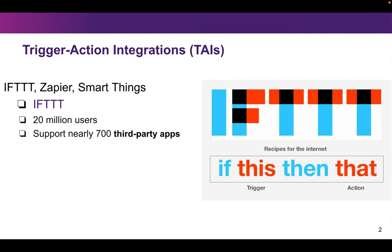Trigger Action Integrations, including IFTTT, Zapier, and SmartThings — as IFTTT is an example, it has 20 million users and supports nearly 700 third-party applications. It uses simple rules: if the trigger event happens, then execute the action event.